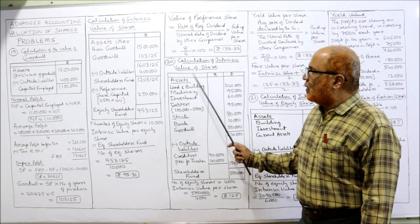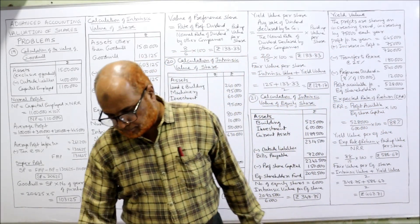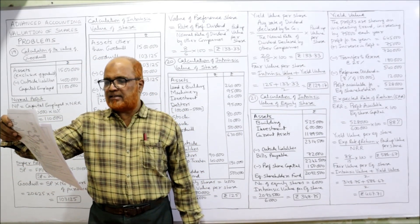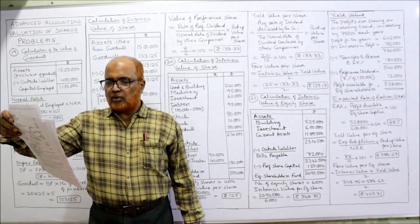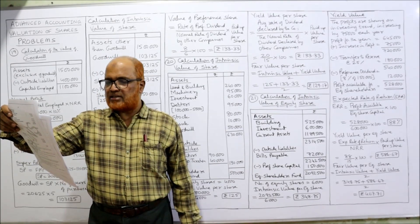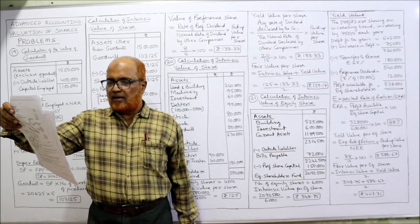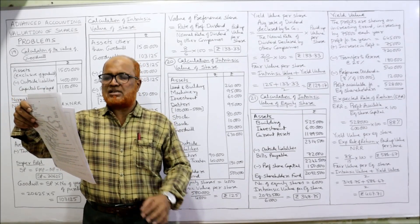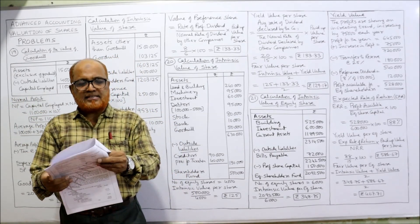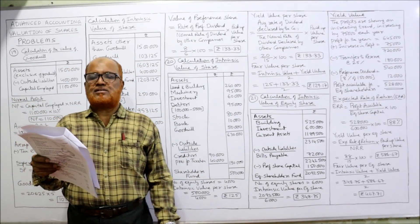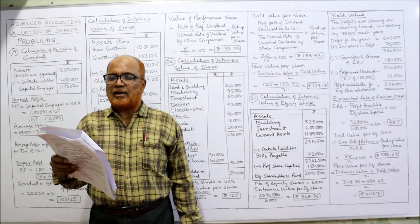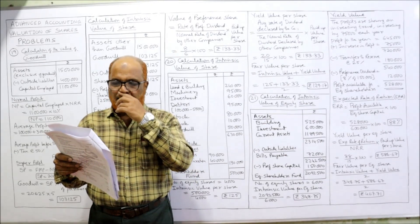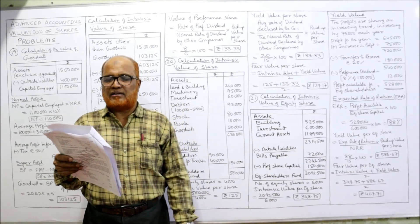Now problem number 20: the balance sheet of Deepak Limited as on 31st March 1998. Shareholders' fund — share capital ₹4 lakh, reserves and surplus ₹1 lakh 10,000. Current liability — trade payables ₹90,000, provision for tax ₹40,000. Total: ₹6 lakh 30,000. On the asset side: tangible fixed assets ₹3,70,000, non-current investments ₹70,000, and current assets totalling ₹6 lakh 30,000.